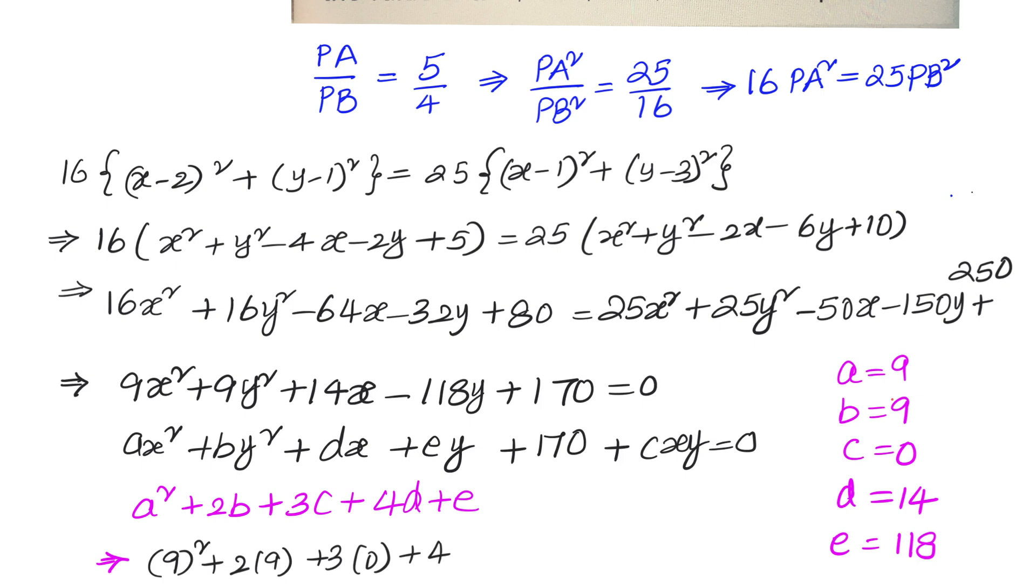This equals 81 + 18 + 0 + 56 - 118. Simplifying, we have 155 - 118 = 37. So the value we have been asked for is 37.